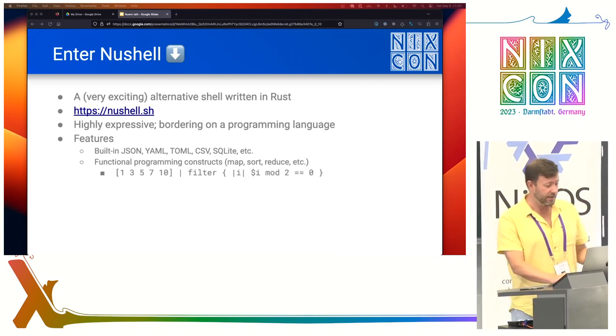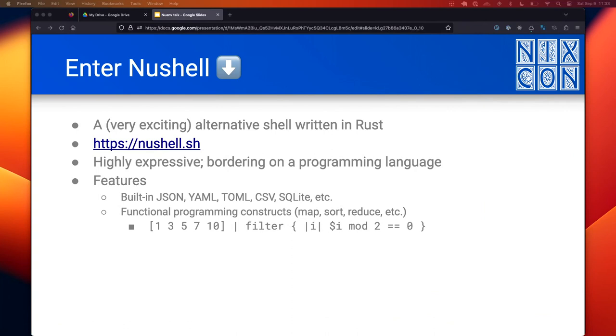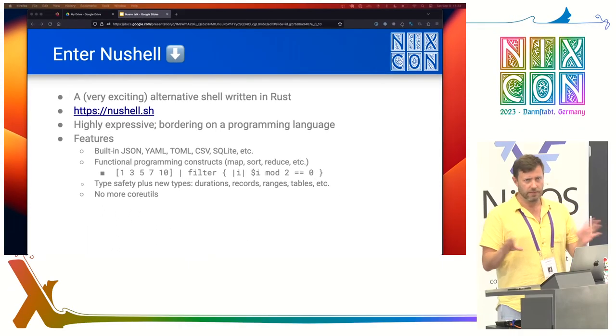You also get functional programming constructs inside Nu Shell like map, sort, and reduce. Here's an example filter function — this yields the even numbers in a list, which would honestly be a nightmare in Bash. You also get type safety in function calls, which is kind of the key point. Not just type safety, but really useful built-in types: records, which are basically like objects in JavaScript, ranges, tables, and a special date type. And you don't really need core utils with Nu Shell — all the basic utilities are included and built around a single set of data interfaces that interoperate seamlessly.